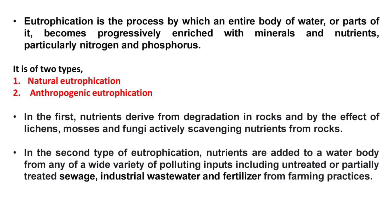The second one is anthropogenic eutrophication. In this type, nutrients are added to a water body from any part of a wide variety of polluting inputs, such as untreated or partially treated sewage, industrial wastewater, and fertilizers from farming practices.